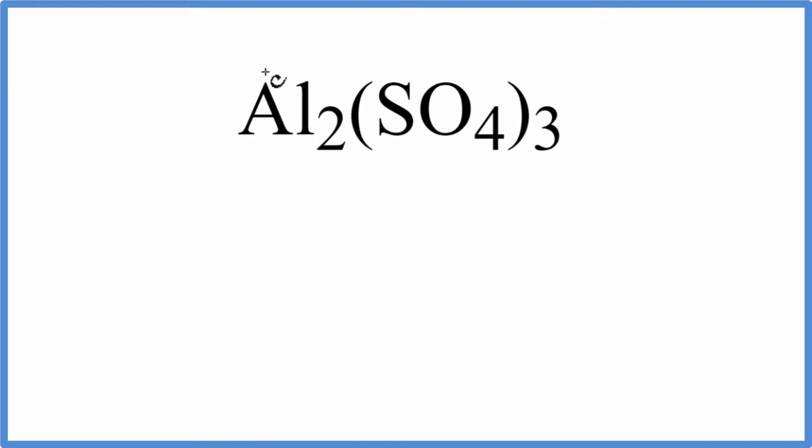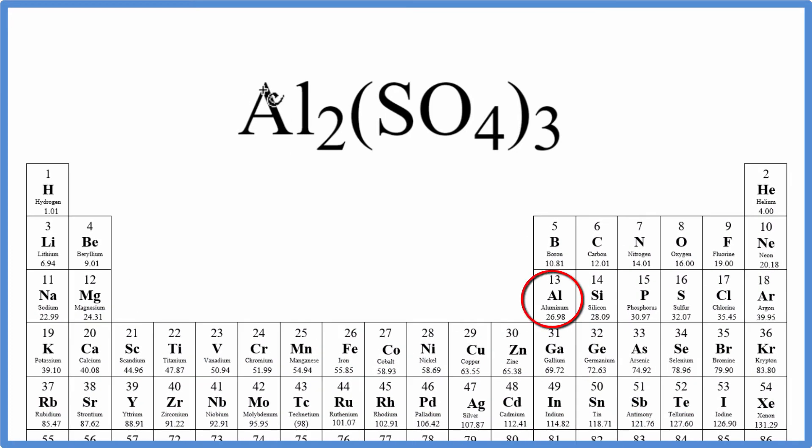We'll look up each element on the periodic table to find the atomic mass. Aluminum is 26.98 grams per mole. I'll wait to write grams per mole until the end. Sulfur is 32.07. Oxygen is 16.00.